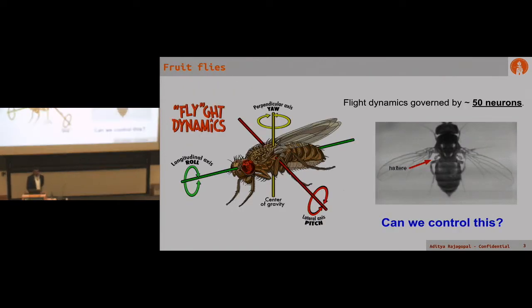Flies got me really excited because they're really small, tiny creatures that have an insanely complex flight dynamic system that's governed by only 50 neurons. We have all these problems with man-made flight dynamic systems, but for a fruit fly maintaining flight, it only takes 50 neurons.